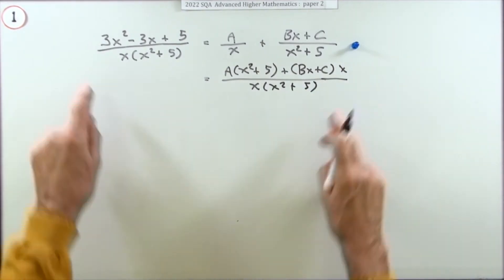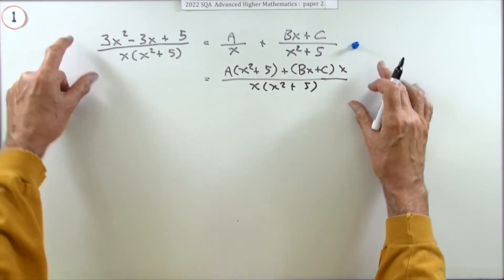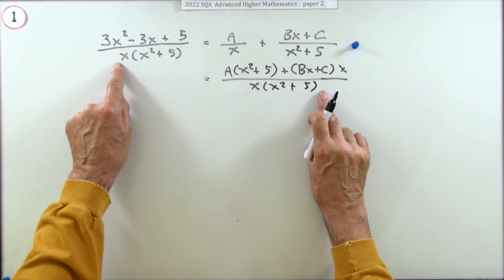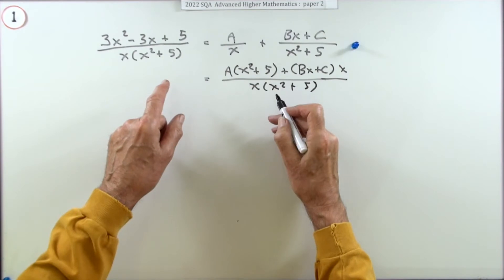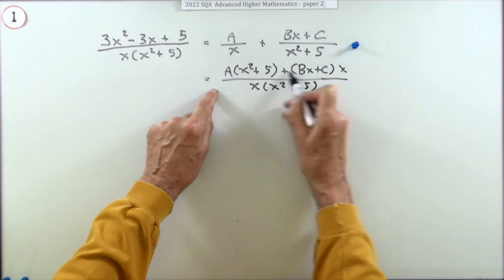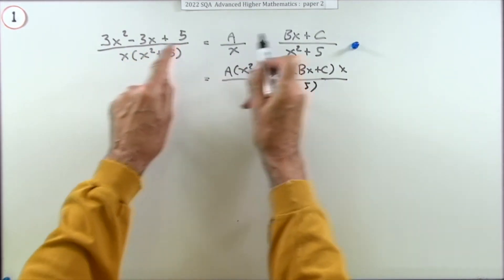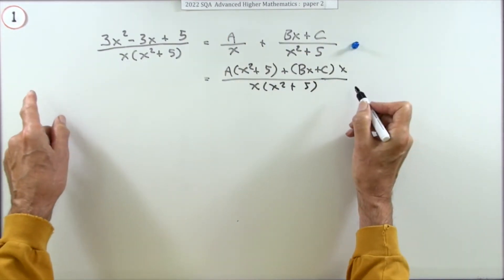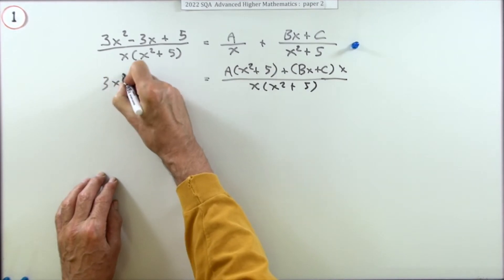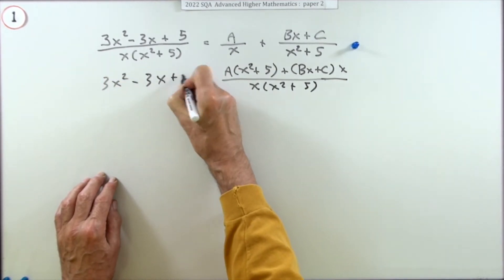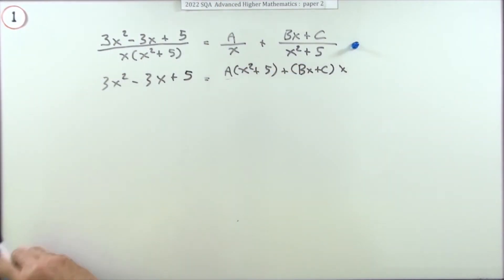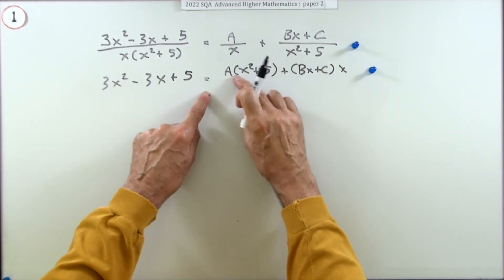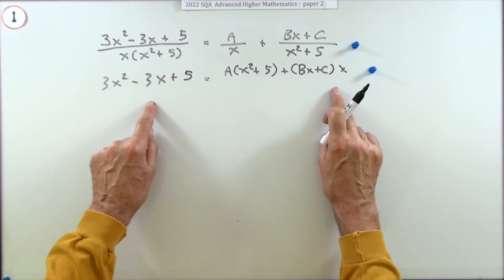Now I can compare them because they're both single fractions with the same denominators. The only thing I need to compare are the numerators. I could have obtained that by taking this across and multiplying. So I'll just write 3x squared minus 3x plus 5 and equate it to the expanded numerator. Doing that gets the second mark — obtaining something you can compare explicitly, part for part, to get the values of A, B, and C.